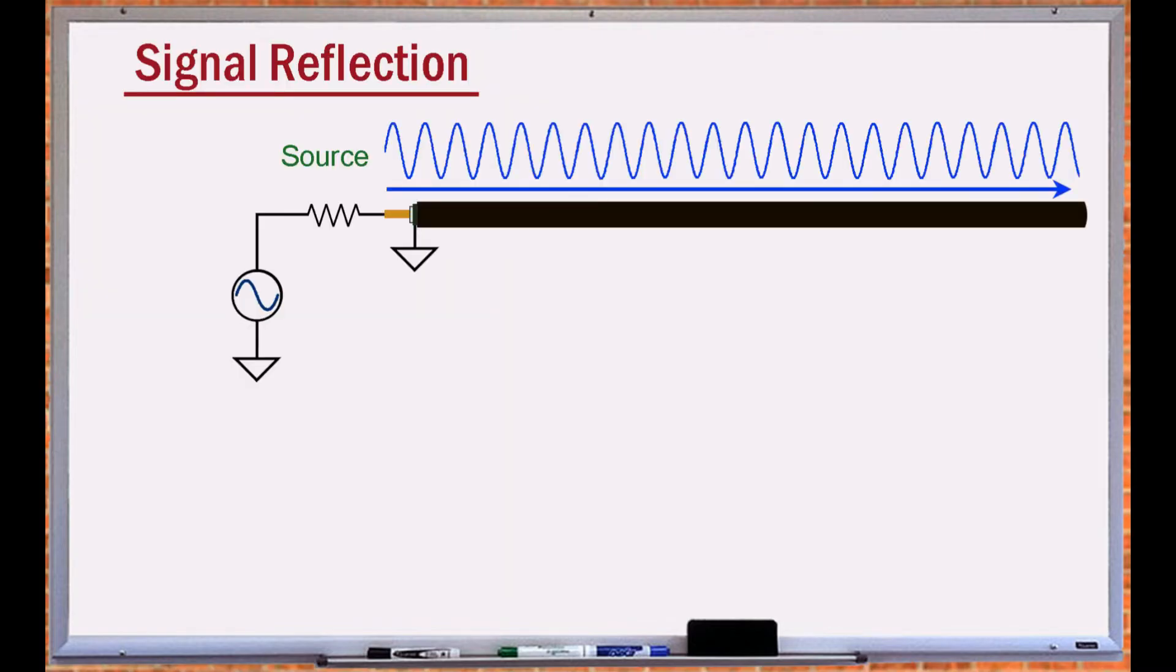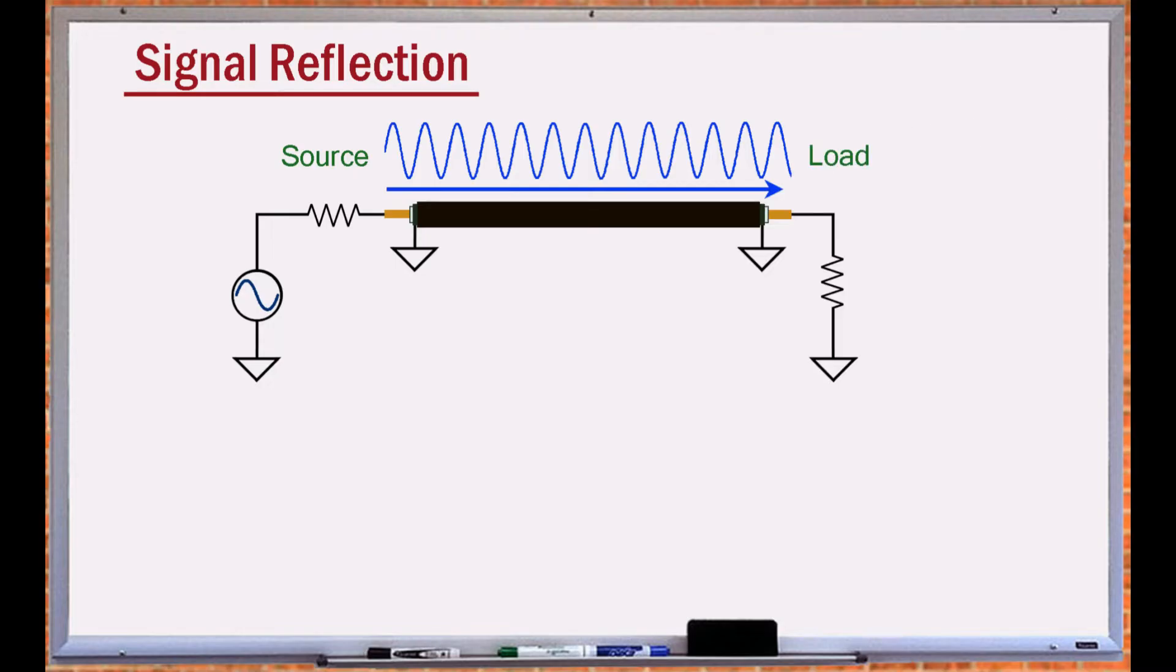When a signal travels through a cable, it is undisturbed until it encounters an impedance change. The characteristic impedance of the cable and the load impedance determine what happens to the signal at the load.